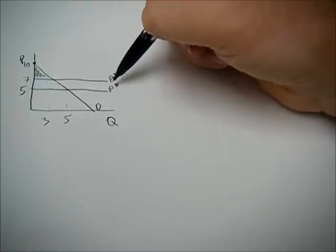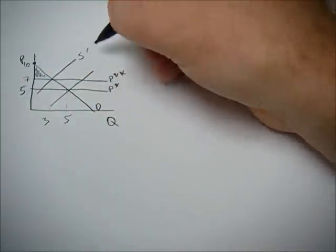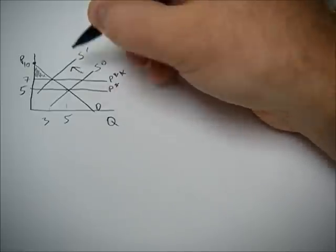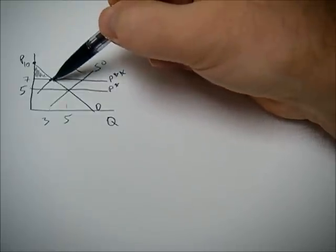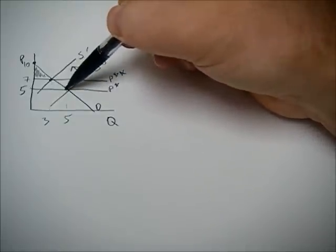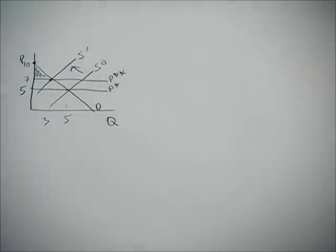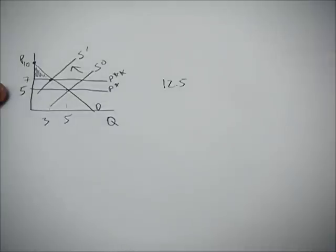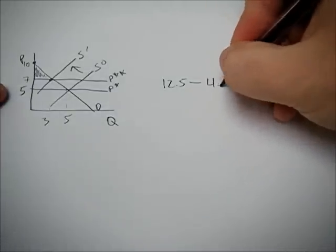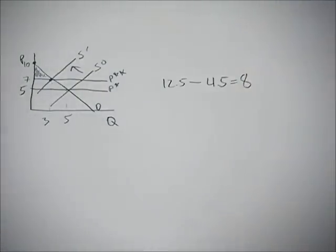So again, even if they were to shift that supply curve, to result in a new equilibrium price, the way you calculate the difference in consumer surplus is just calculate the area of the triangle before and the area of the triangle after. So we know that the area of the triangle before was 12.5. The area of the triangle after, 4.5, gives us that 8.